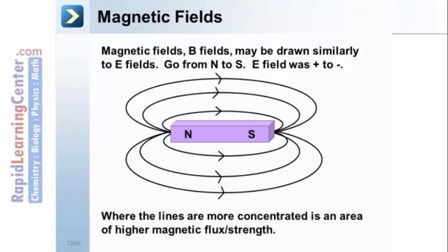Where the lines are more concentrated in an area, that area has a higher magnetic flux, or strength.